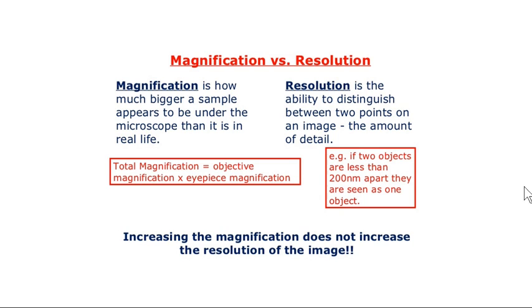If we calculate the total magnification: if the objective lens is 100x and the eyepiece is always 10x, the total magnification is the multiplication of both—100 times 10 equals 1000x. Similarly, 40 times 10 equals 400x. That's how we calculate total magnification.